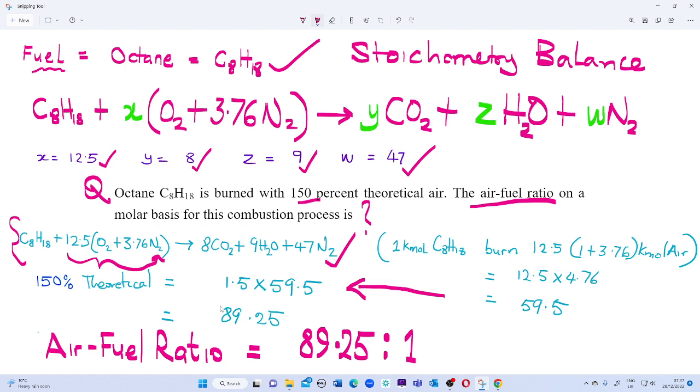Looking at this balanced stoichiometric equation, our air constituent is 12.5(O₂ + 3.76N₂). Now looking at our air constituent here, we can pull this out to find the equivalent constant while burning under the chamber.